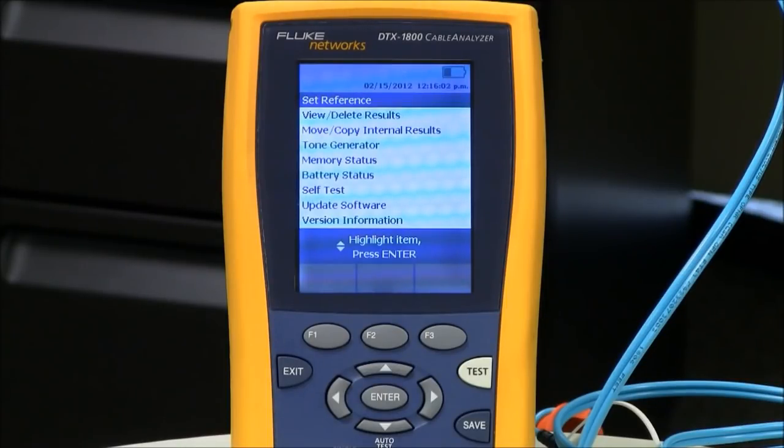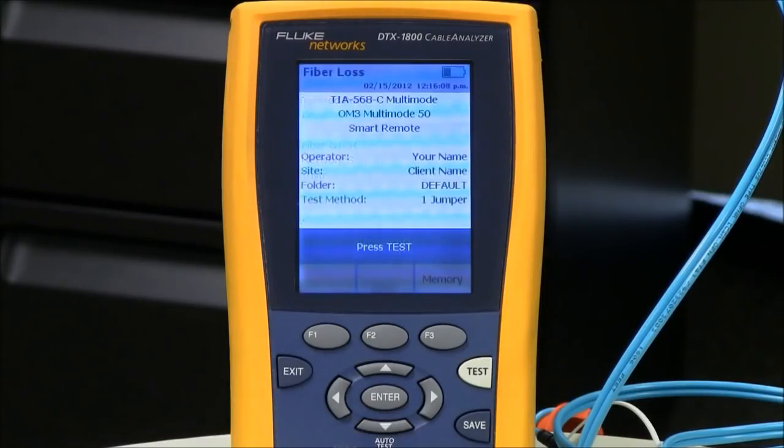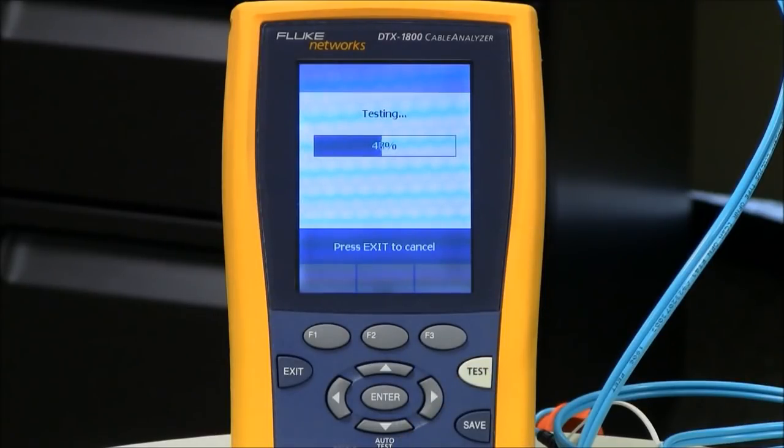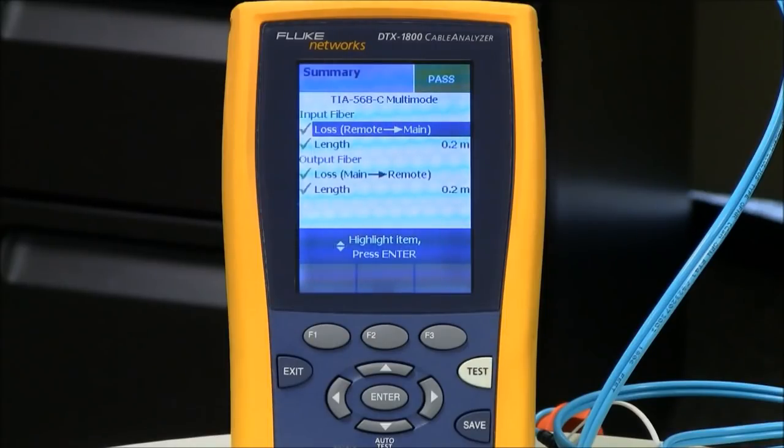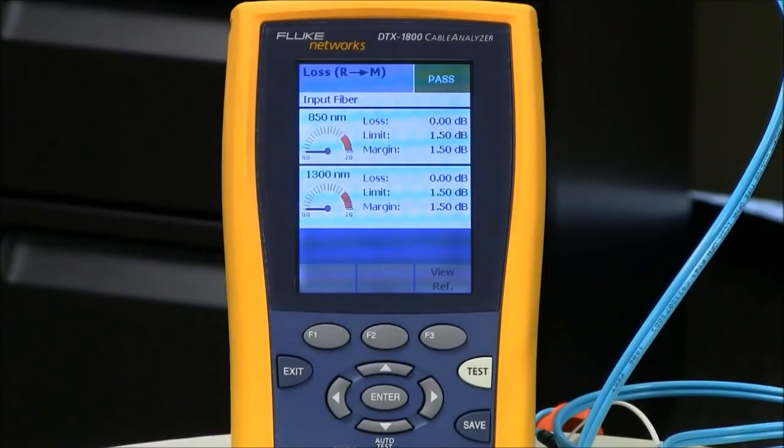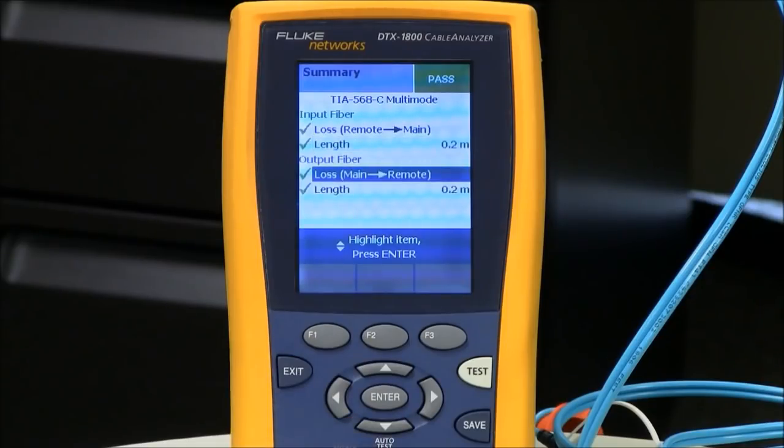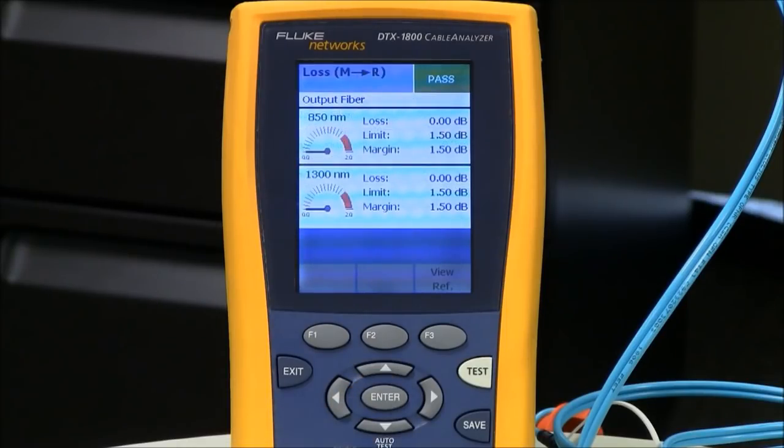And now, a step that very few people do. I want to make sure that my sources are stabilized. So, I'm going to rotate the dial to auto-test and run a test. If my sources are stabilized, I should see zero dB loss on both fibers. The input fiber noted here is the fiber going to the input port on the main unit. I hit Enter and I see zero and zero, which means that my source on the remote is stable. I then go and look at my output fiber, which is the fiber connected to the output port on the main unit. And it's also showing zero and zero. Good. My sources are stabilized. On to the next step.